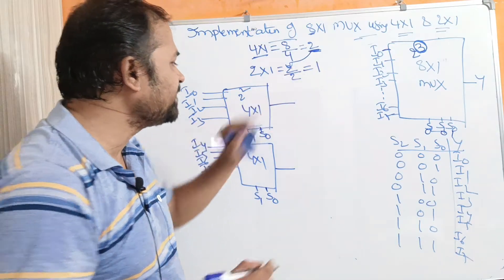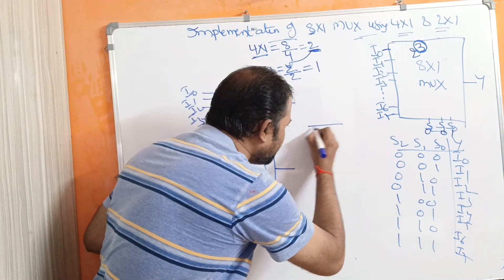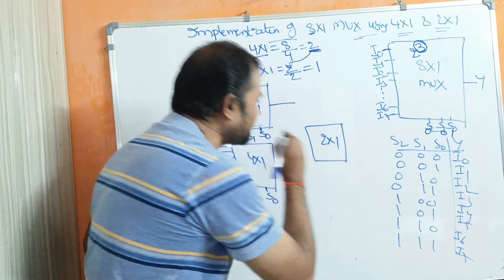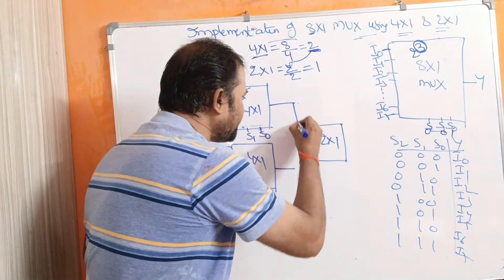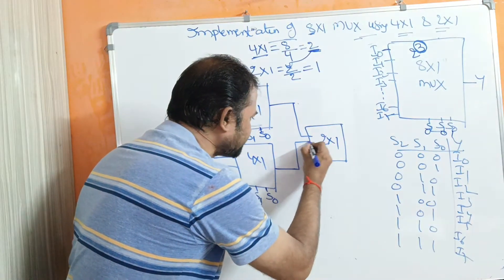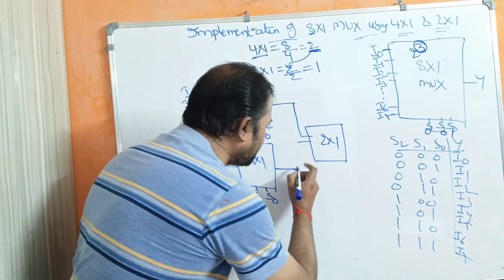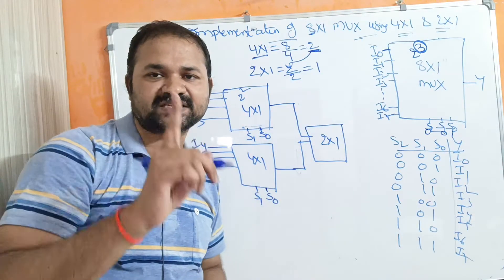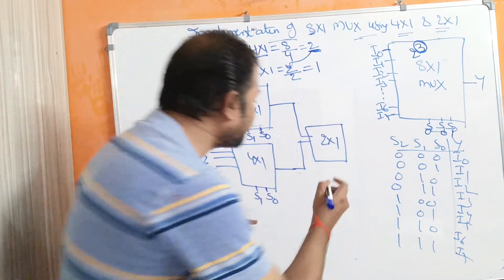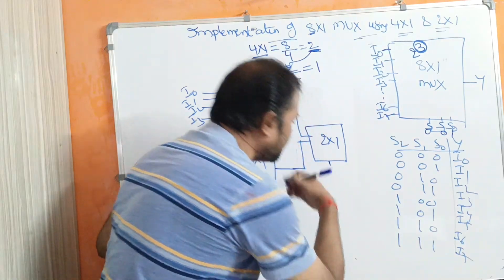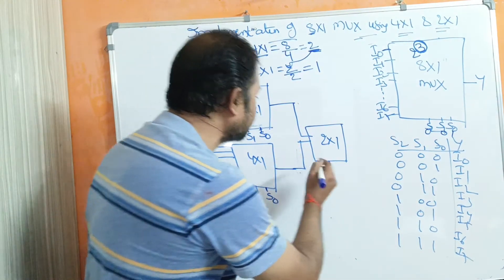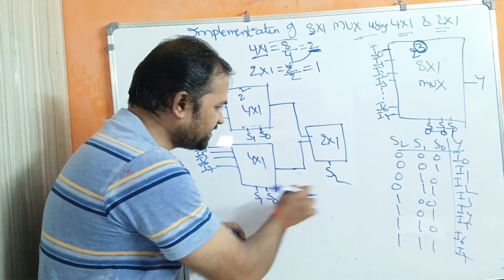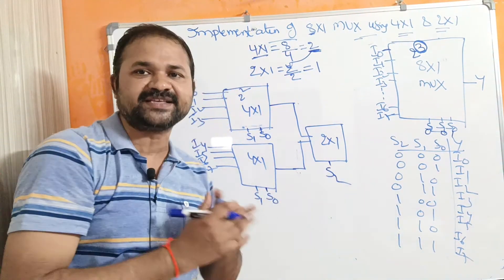At the second level, we require one 2 by 1 multiplexer. Its two data inputs come from the outputs of the two 4 by 1 multiplexers. The 2 by 1 multiplexer has one selection input. The selection or control input at the second level is S2. So at the first level the selection inputs are S0 and S1, and at the second level the selection input is S2.